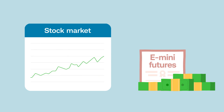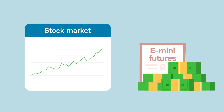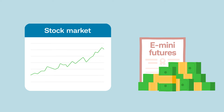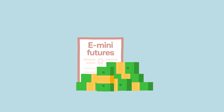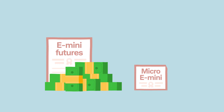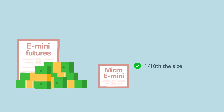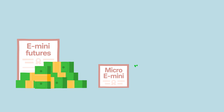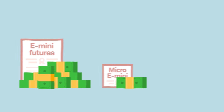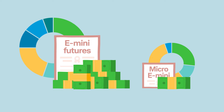As the value of stock market indices rose, so did the notional value of stock index futures. As a result, the amount of capital needed to trade these products grew. To once again make stock market index futures more accessible to retail futures traders, CME launched Micro E-mini futures, which are one-tenth the size of their E-mini counterparts. These products allow traders to speculate on stock market indices without taking on the larger dollar risk of standard E-minis. Traders can also hedge a smaller portfolio with these products.